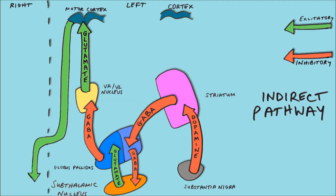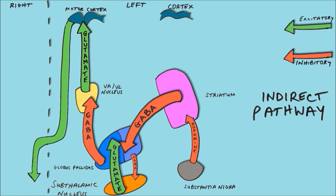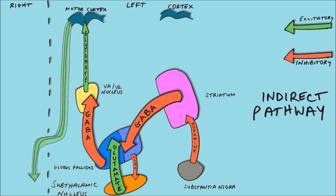In Parkinson's disease, however, there is degeneration of the dopaminergic neurons of the substantia nigra, so there is reduced inhibition of the striatum, allowing it to increase its inhibition of the lateral globus pallidus. This causes the lateral globus pallidus to reduce its inhibition of the subthalamic nucleus, leading the subthalamic nucleus to stimulate the medial globus pallidus to a greater extent. This stimulation allows the medial globus pallidus to inhibit the VAVL nucleus more strongly, reducing its activation of the motor cortex and leading to less motor output from the cortex to the muscles — creating the hypokinetic symptoms such as bradykinesia spoken of earlier.